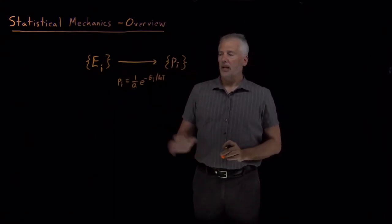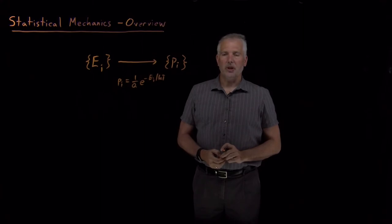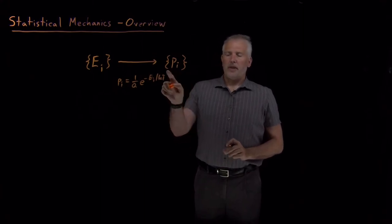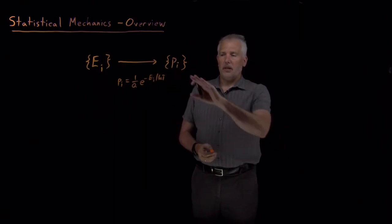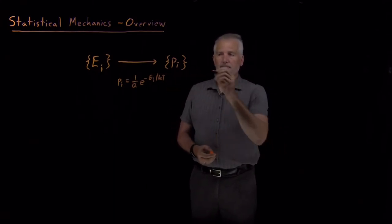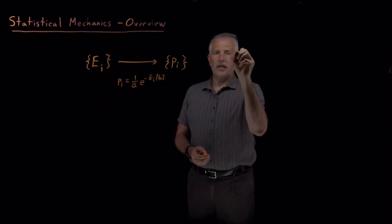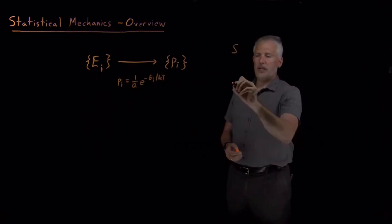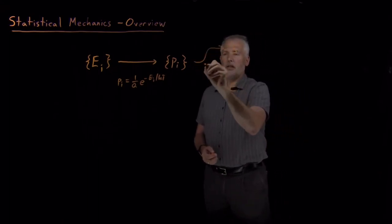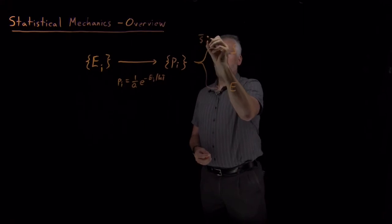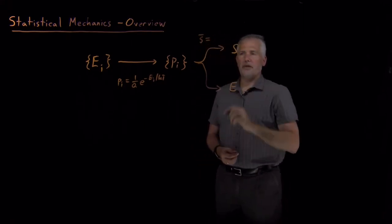Boltzmann's probability distribution helps us do that. The reason we're interested in the probabilities is because those can tell us something about the larger state of the system. For example, the entropy of the system or the energy of the system.